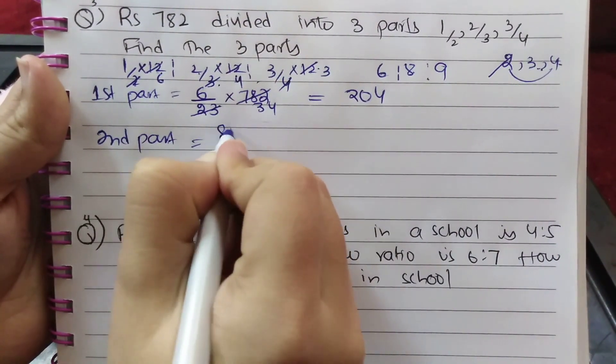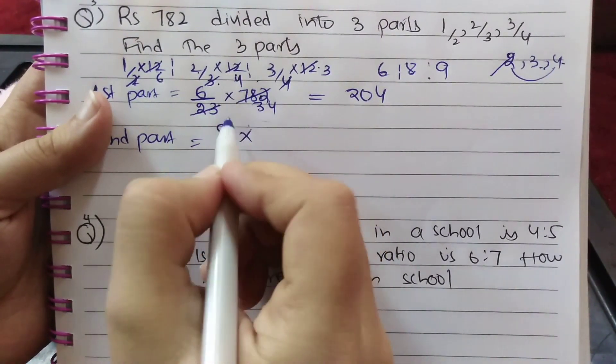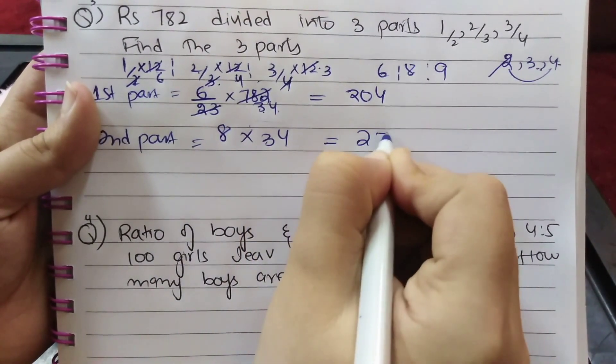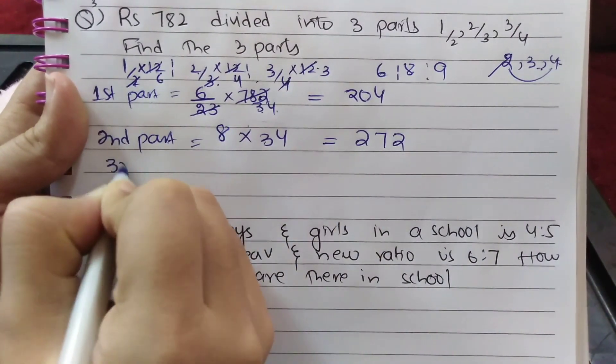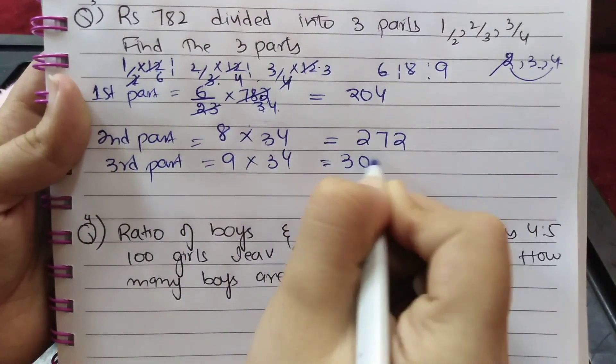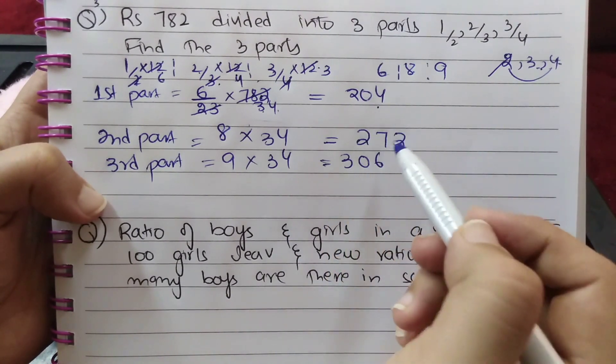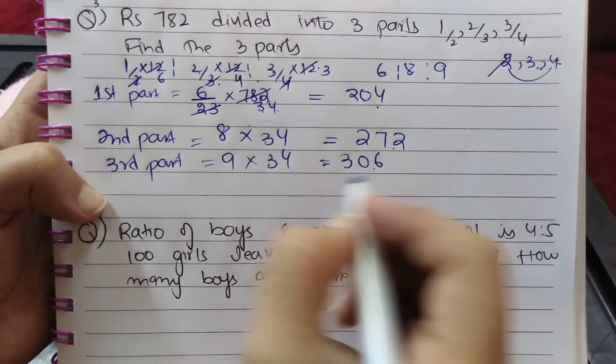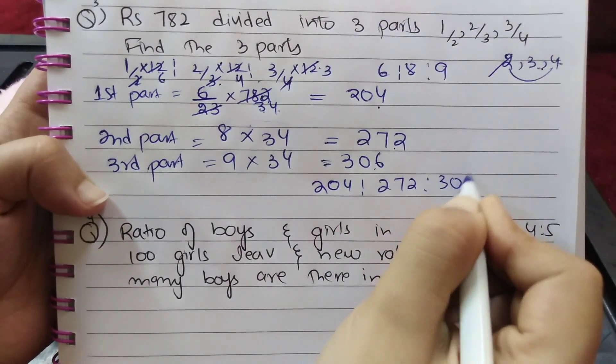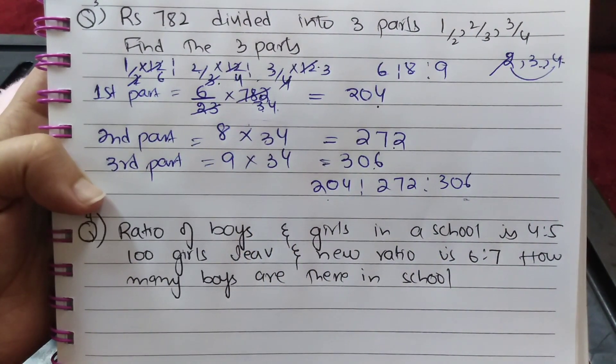Third part = 9 × 34 = 306. So the three parts are Rs 204, Rs 272, and Rs 306. If we sum up all these ratios, the result will be 782.